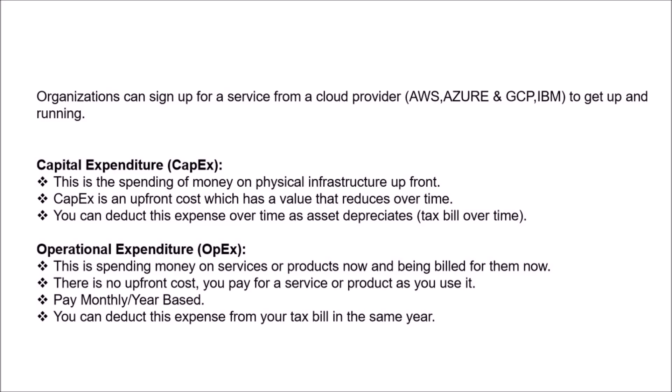You buy physical servers or storage now and use them for a long period, which means your costs reduce over time — in the future you may not spend as much as you are spending right now. You can also deduct this expense over time as an asset, because you are buying physical infrastructure and the upfront cost will be very high.